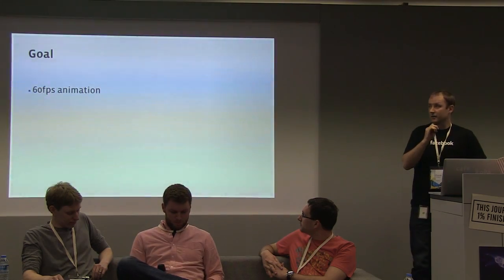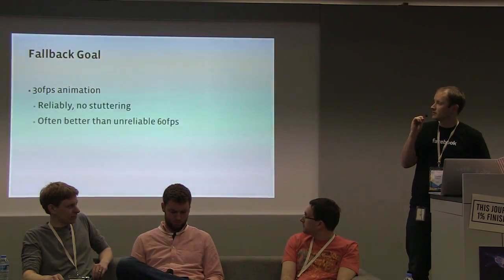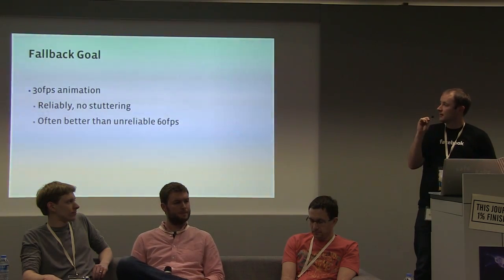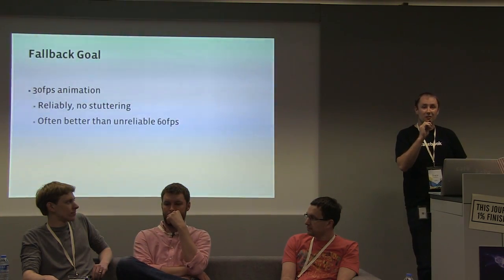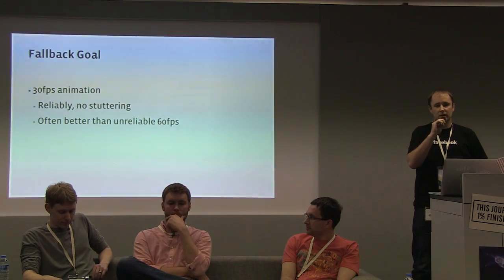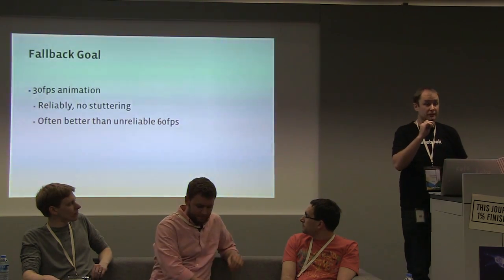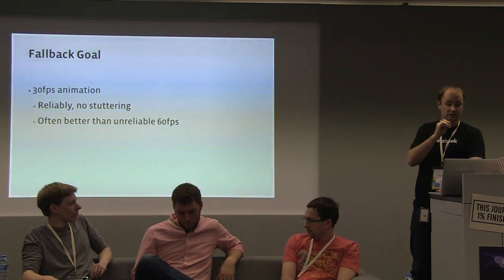The goal is 60 frames per second animation with no dropped frames — this is the panacea everybody wants. But it's not always possible. So let's have a fallback goal of 30 frames per second animations, make it reliable, make it have no stuttering. This often is achievable. In a lot of user tests we've done, steady 30 FPS tends to perform a lot better than something that runs at 60 FPS some of the time and drops to 40. People often see that as worse than a consistent 30 FPS.